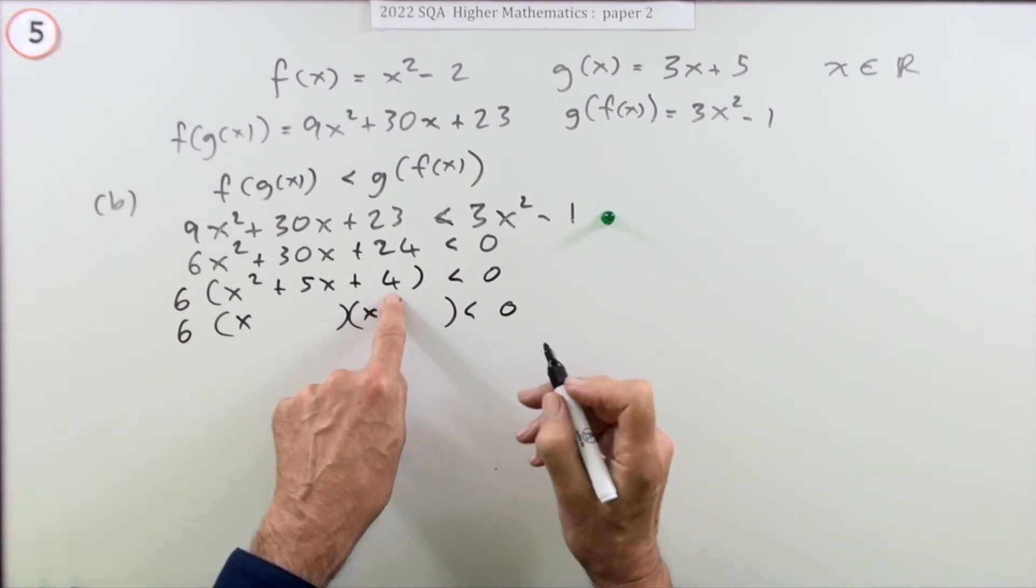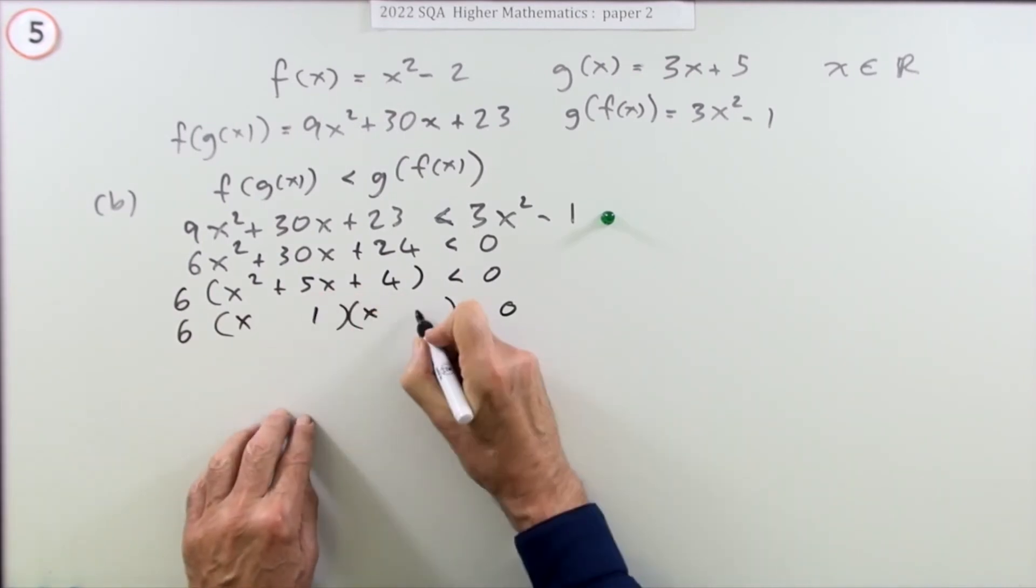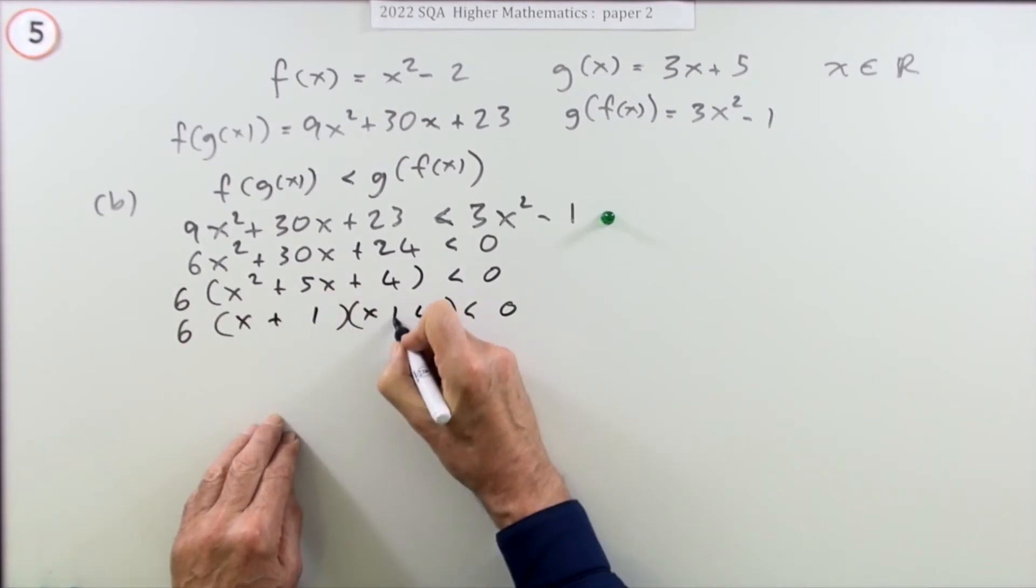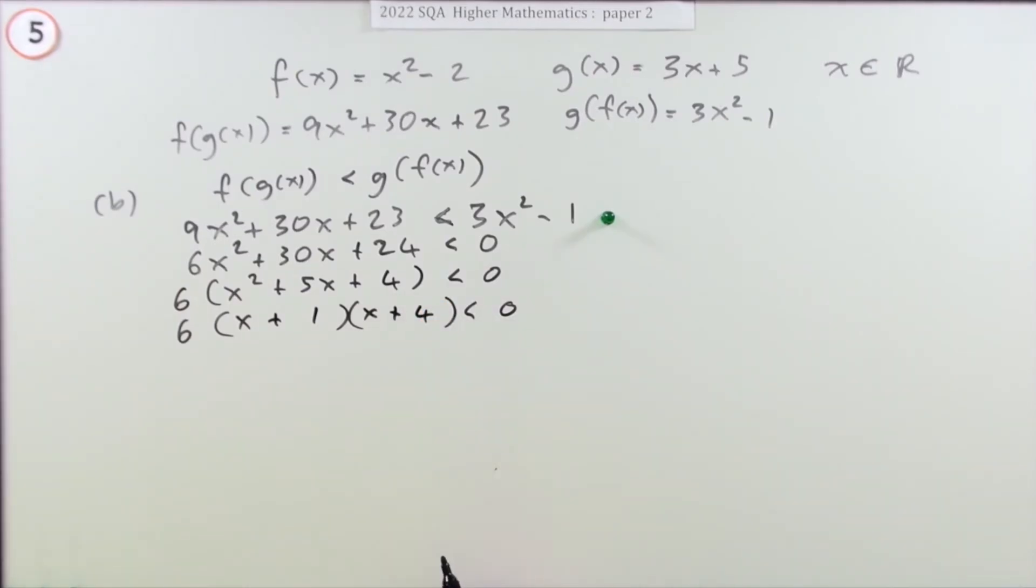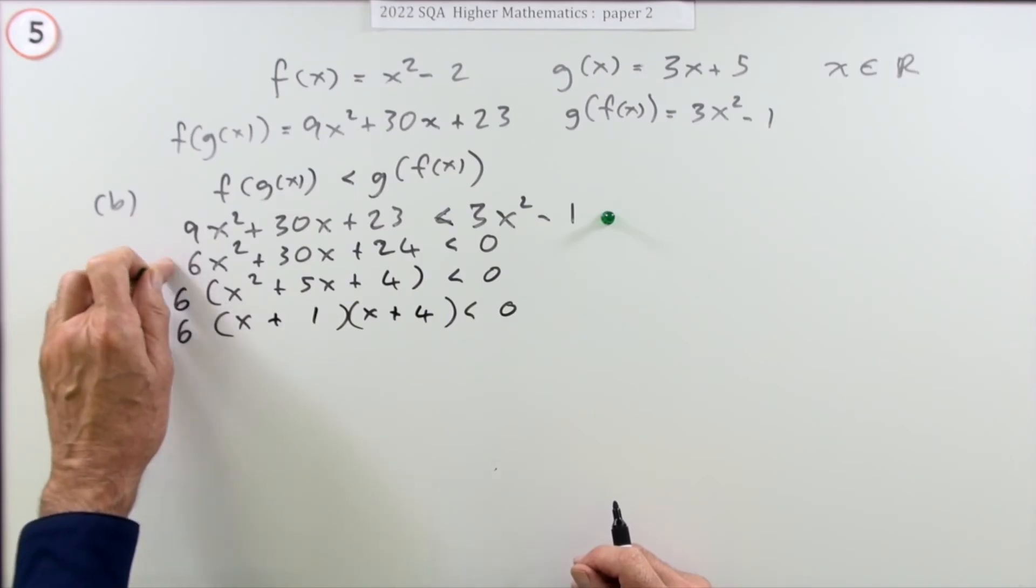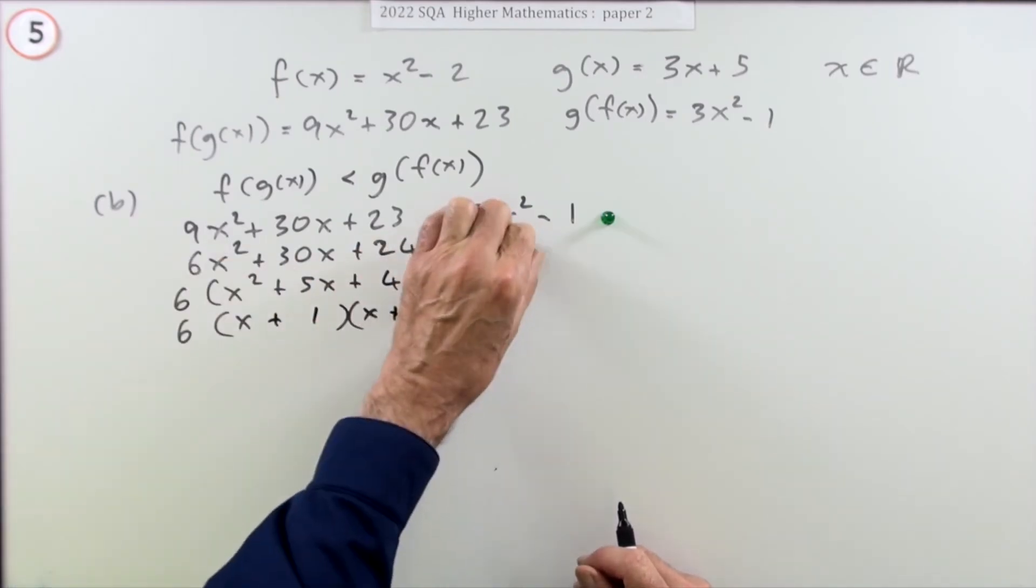Numbers that multiply to 4 and add to 5 are 1 and 4. So 6(x plus 1)(x plus 4) less than 0. Rearranging the quadratic inequality gets a mark.